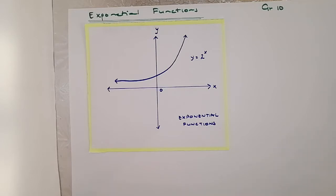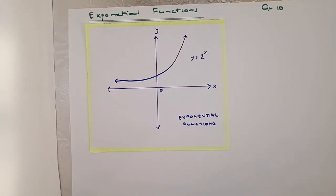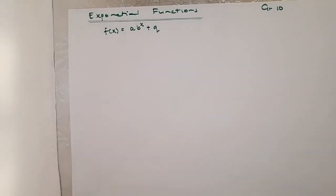This is an example of an exponential function. We're going to look at different maneuvers that are done to an exponential function and the effect those maneuvers have on the equation of the function. The general form is: f(x) = a · b^x + q. We'll look at the different elements this equation holds.